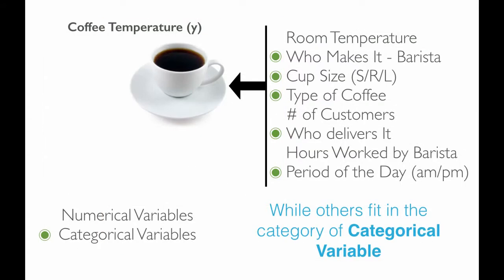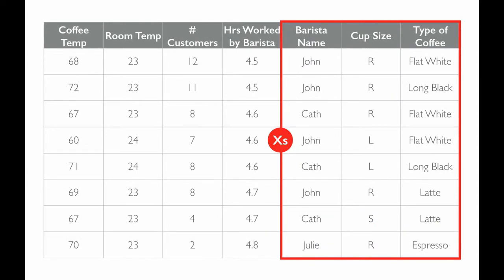Other variables in this model fit within the category of categorical variables, and they would be: who makes the coffee, the different cup sizes, the type of coffee, who delivers it, and the period of the day. When we look at the data collected, categorical variables appear differently than numerical variables — they are in written form. The word categorical alludes to the idea that you could break the data apart by categories: for example, separating all coffee temperature data by who makes it, comparing John's temperature data to Kath's temperature data, or doing the same for different cup sizes and types of coffee.